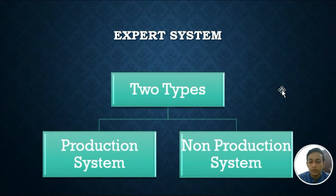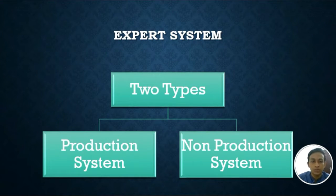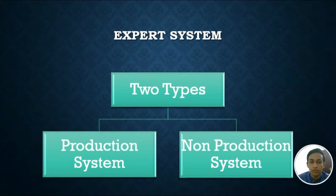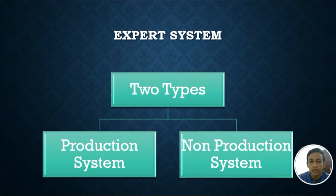Before learning about blackboard architecture, we need to know about expert systems. An expert system is a computer system that emulates or acts in all respects with the decision-making capabilities of a human expert, attempting to model expert decision-making in a limited domain. Examples of expert systems are medical diagnosis, computer configuration, machine fault diagnosis, etc.